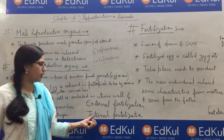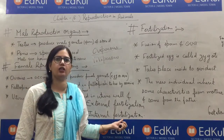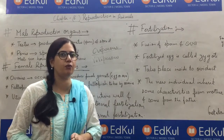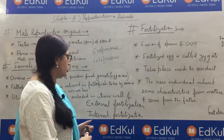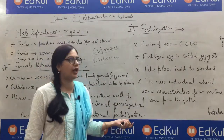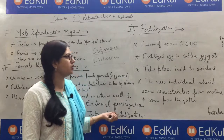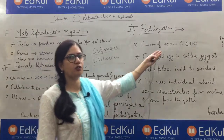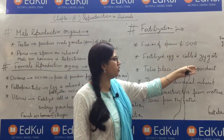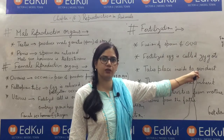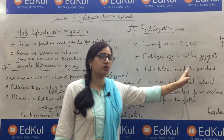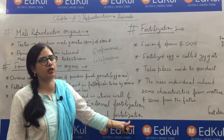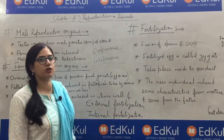In internal fertilization, the fusion of male and female gametes takes place inside the body. In human beings, for example, the fusion of sperm and ovum takes place in the oviduct. So it is internal fertilization. Example: human beings.